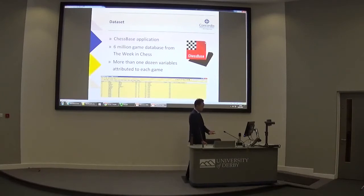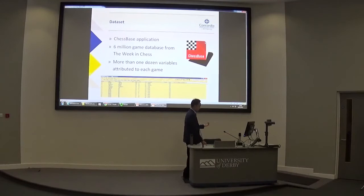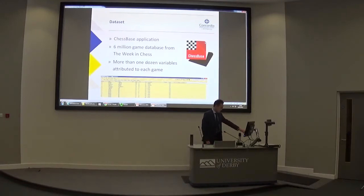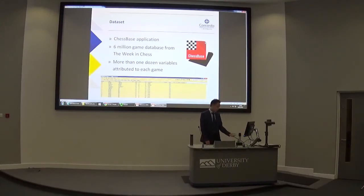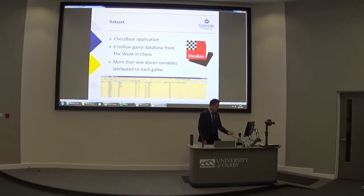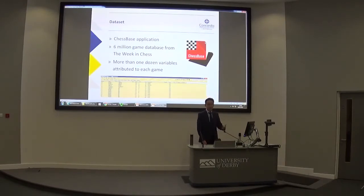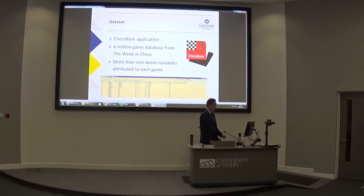There are more than a dozen variables attributed to every single one of these games. For example, we have the game number, the players, the result, the ratings for both players, the number of moves played, the opening played, the tournament name, the date, the round number, sometimes an annotator, and of course the game itself. Every single move for every single competitive game is stored in this database, so it's quite a powerful database.